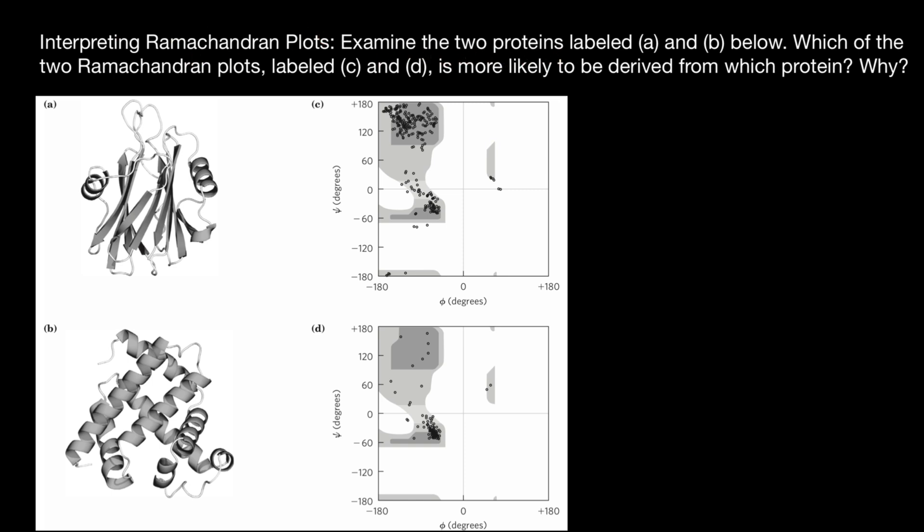Examine the two proteins labeled A and B below. So protein A and protein B. Which of the two Ramachandran plots labeled C and D is more likely to be derived from which protein and why?